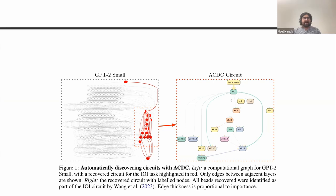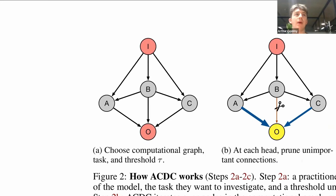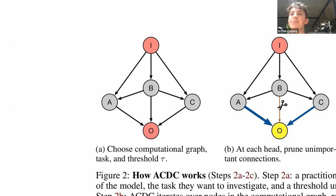One problem, or subtlety, with the ACDC approach is that you can sometimes get dead paths that appear in the algorithm. So if we focus on figure 2a and 2b, we may find that the connection AO is very important because it leads to a downstream change in performance. But we may then later find that we can remove the connections IA, so the two incoming connections to node A, and that neither of these do have as large enough effect to be included in the subgraph.